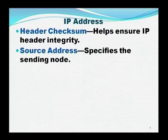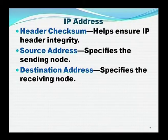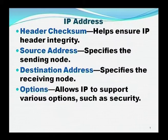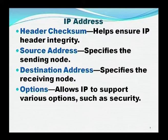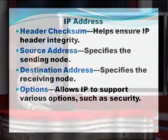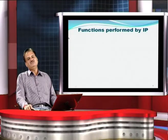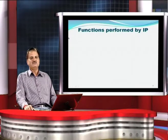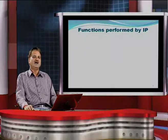Source address specifies the IP address of the sending node — who has transmitted the information. Destination address specifies the receiving node. Options allow IP to support various options as far as security is concerned. Data contains upper-layer information. So these are the different segments used by the IP address.